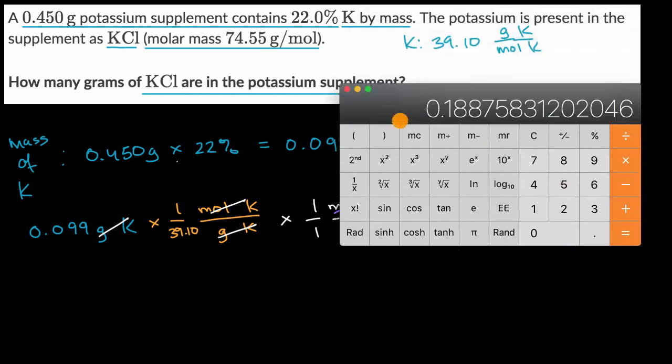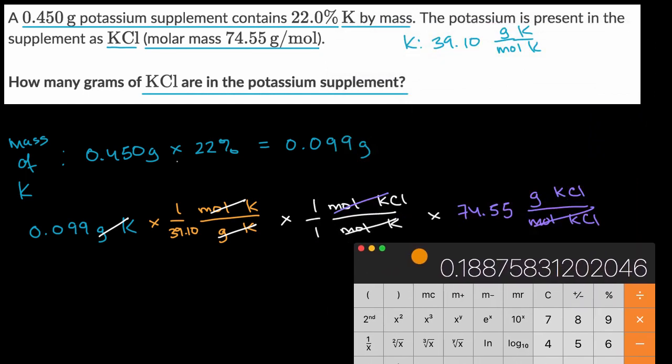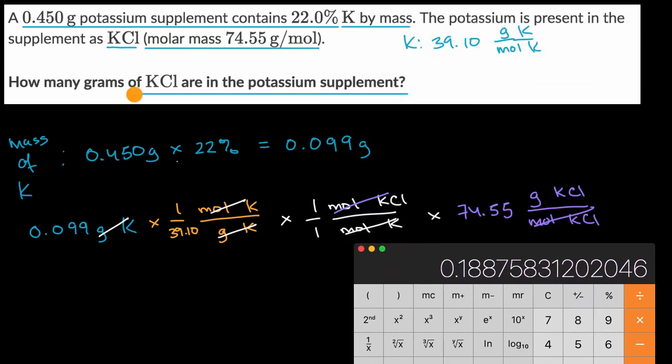And then let me think about my significant figures, or my significant digits here. So let's see, out of all of the information I used, I have three significant figures here, I have three here, I have four here, I have four here. So I'm multiplying a bunch of things and dividing. So I have to take the minimum number of significant figures, which is three. So I will round to three significant figures, which is 0.189 grams.